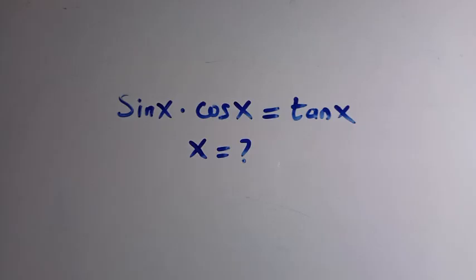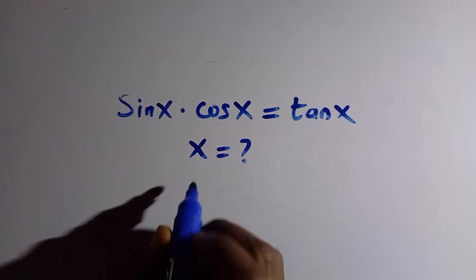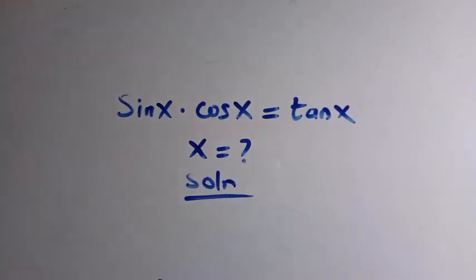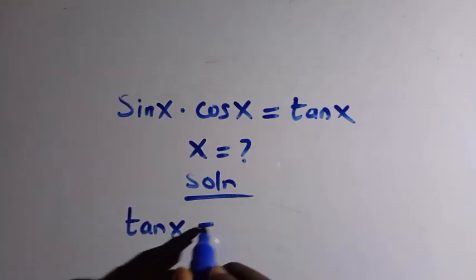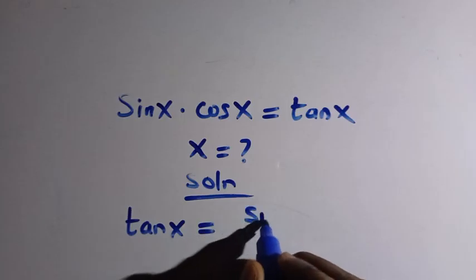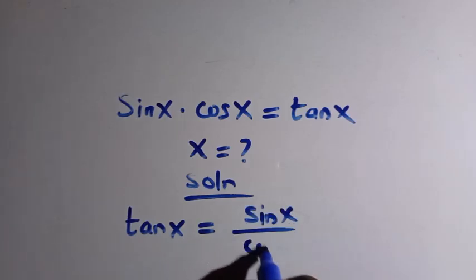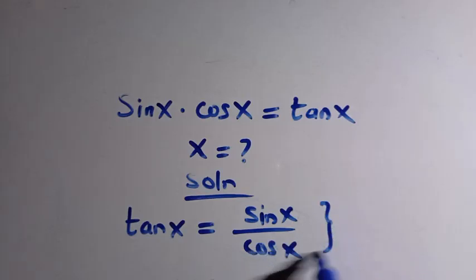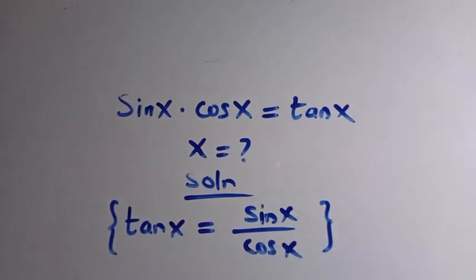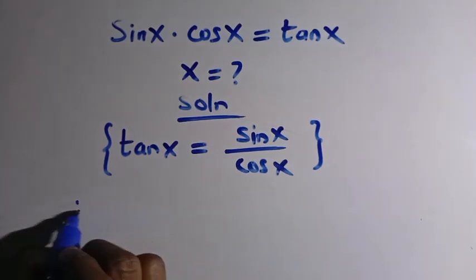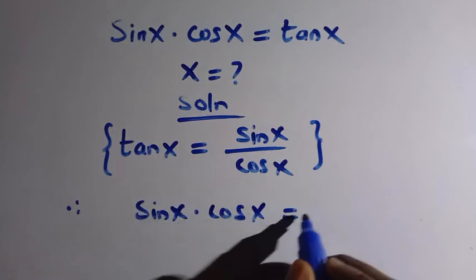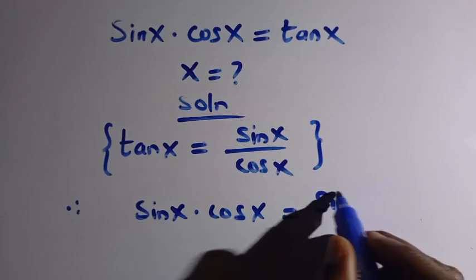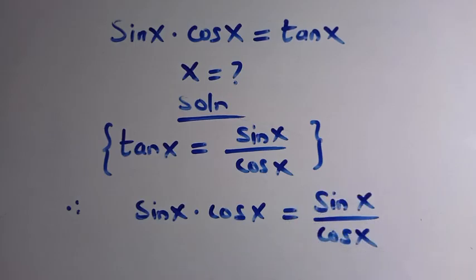So the equation is: sine x multiplied by cos x equals tan x. To solve this, we recall the identity for tangent: tan x equals sine x divided by cos x. We note this identity and replace tan x in the given equation, so we have sine x multiplied by cos x equals sine x divided by cos x.